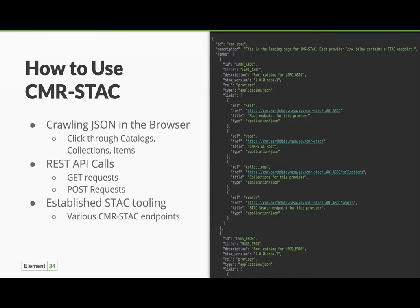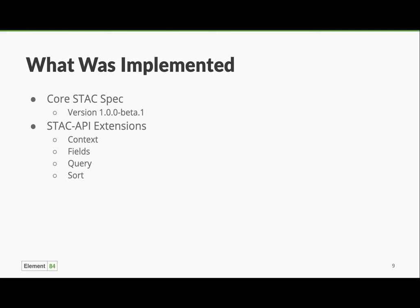We implemented all of the core STAC spec. Version 1.0.0-beta-1 came out a few weeks into development, so we were able to build to that. We also had time to implement STAC API extensions including context, fields to specify what you want back from your query, the filter extension to query with inequalities like cloud cover greater than a certain value, and the sort extension.